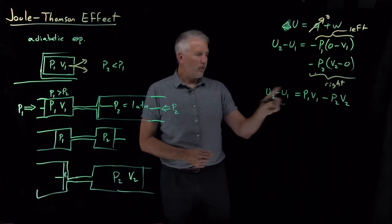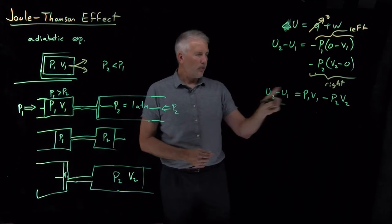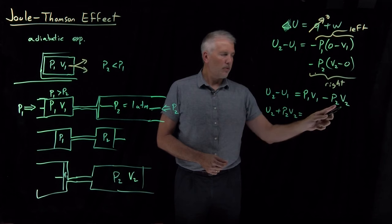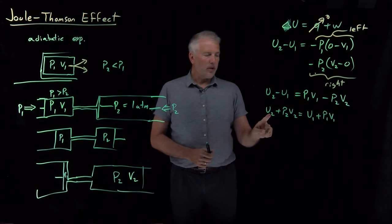If I rearrange that equation just a little bit to get the twos over to the left-hand side and the ones over to the right-hand side, I see that U2 plus P2V2, bringing these over to the other side. When I bring U1 over to the right side, it becomes positive. So I've got U1 plus P1V1. And this quantity, U plus PV, we know another name for the internal energy plus the PV product. That's just equal to the enthalpy.